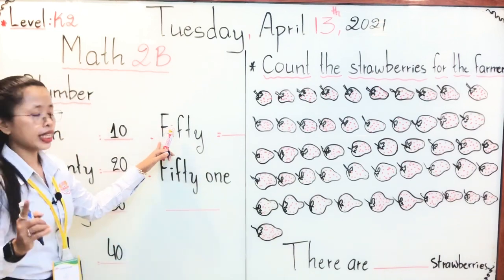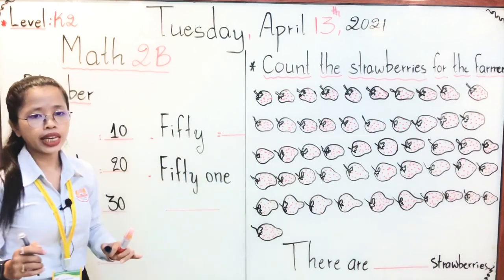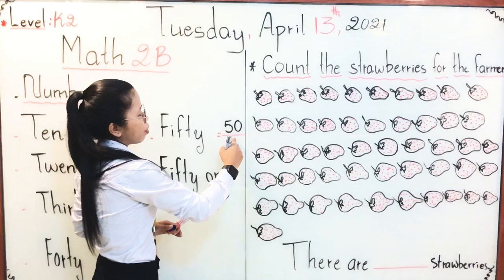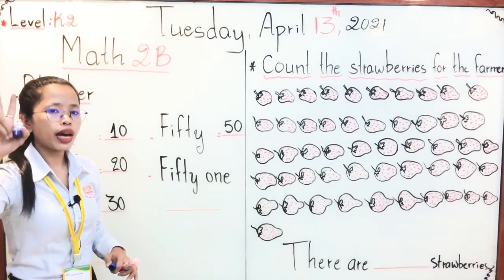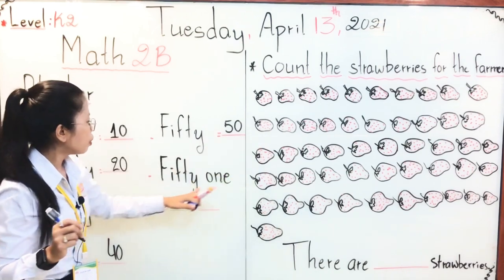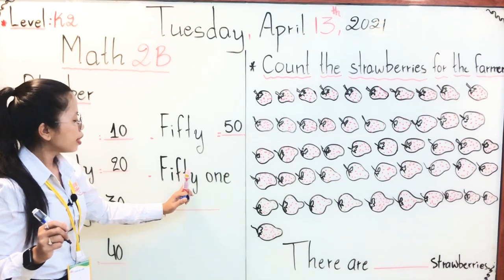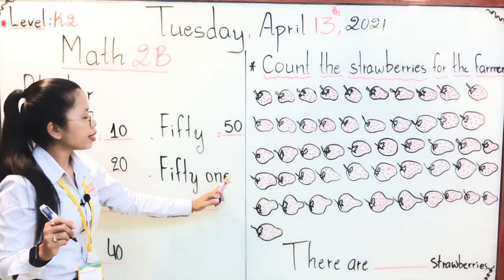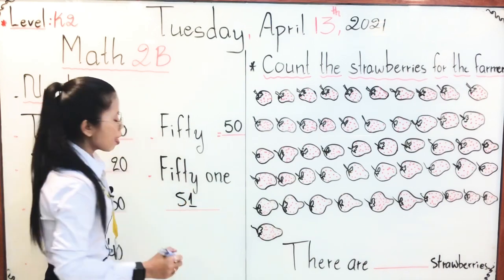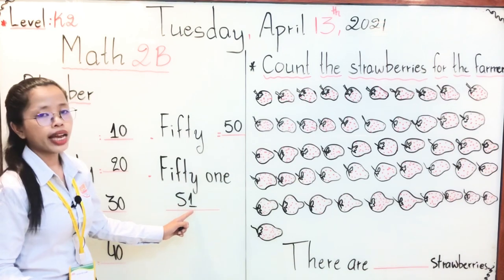And the next is number 50. Fifty is spelled F-I-F-T-Y. In number 50, we also have 2 digits: one is number 5 and another is number 0. So 5 and 0 is number 50. Then our last number has the word fifty-one, F-I-F-T-Y O-N-E — that is 51. So we write number 5 and number 1. Five and 1 is number 51.